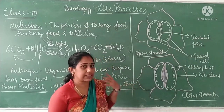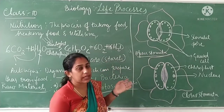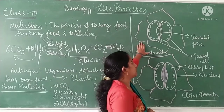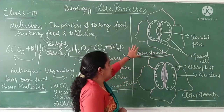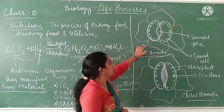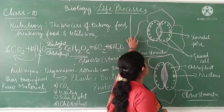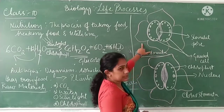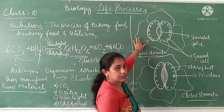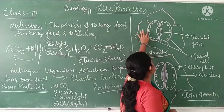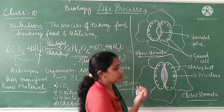Through the stomata, exchange of gases takes place. A single one is called a stoma; many are called stomata. In the open stomatal structure, you can see two guard cells present. The guard cells are surrounded by subsidiary cells and epidermal cells. Within the guard cells you can find a nucleus, and small green dot-like structures which are the chloroplasts.